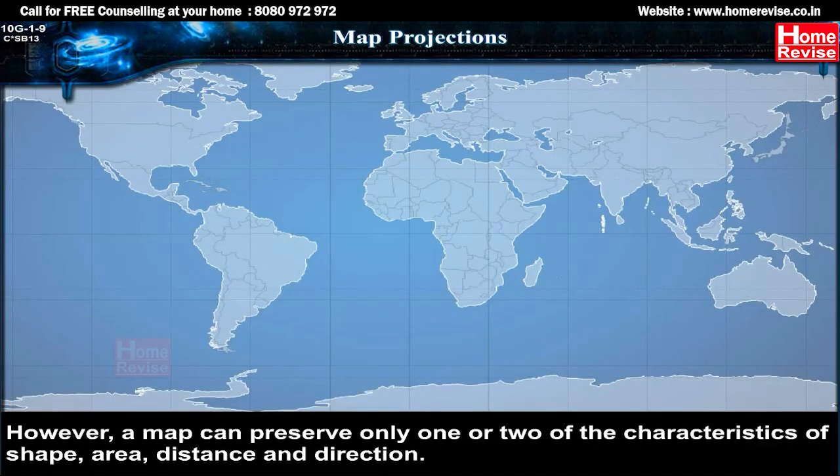However, a map can preserve only one or two of the characteristics of shape, area, distance and direction.